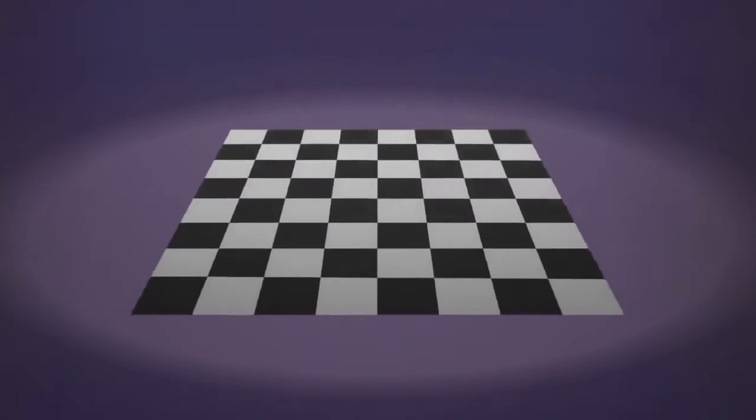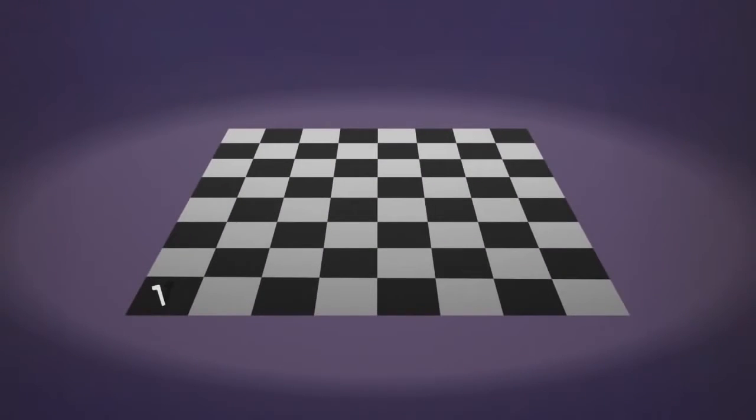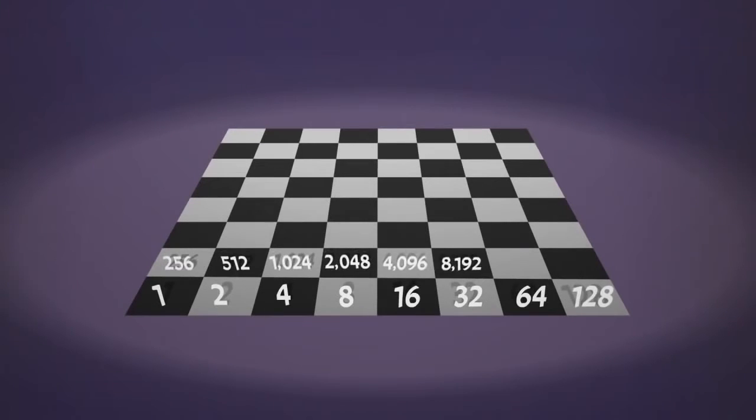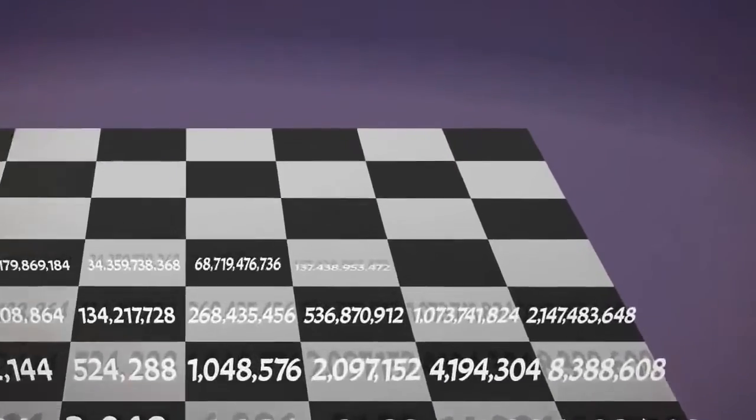If we place a single grain of rice on the first square of a chessboard, double this and place two grains on the second, double again and place four on the third, double again and place eight on the fourth and continue this way, putting on each square twice the number of grains than were on the previous one, by the time we reach the final square, we need an astronomical number of grains.